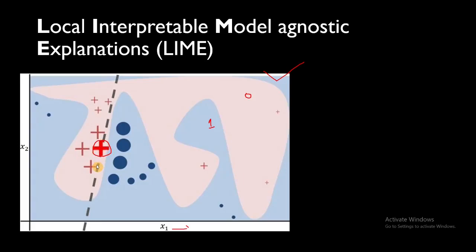What the LIME algorithm does is it first generates some random numbers. From the selected sample we get values of x1 and x2, and using those it generates random points around it. It then feeds these random points to the neural network, and the neural network's prediction decides the color of each point. For high-dimensional cases this is hard to visualize, but for this simple case we'll interpret the LIME model.